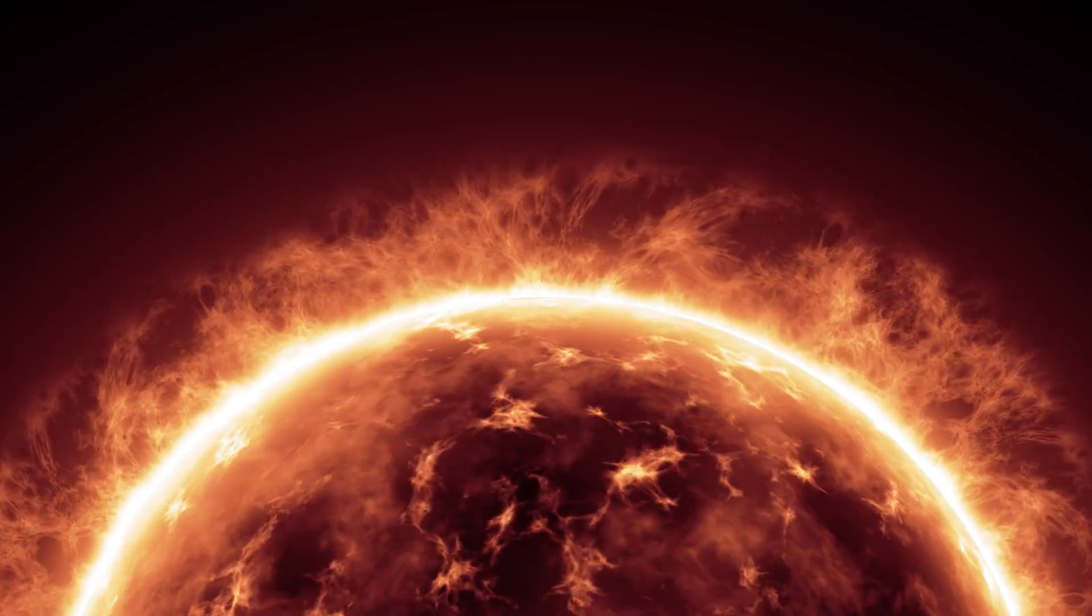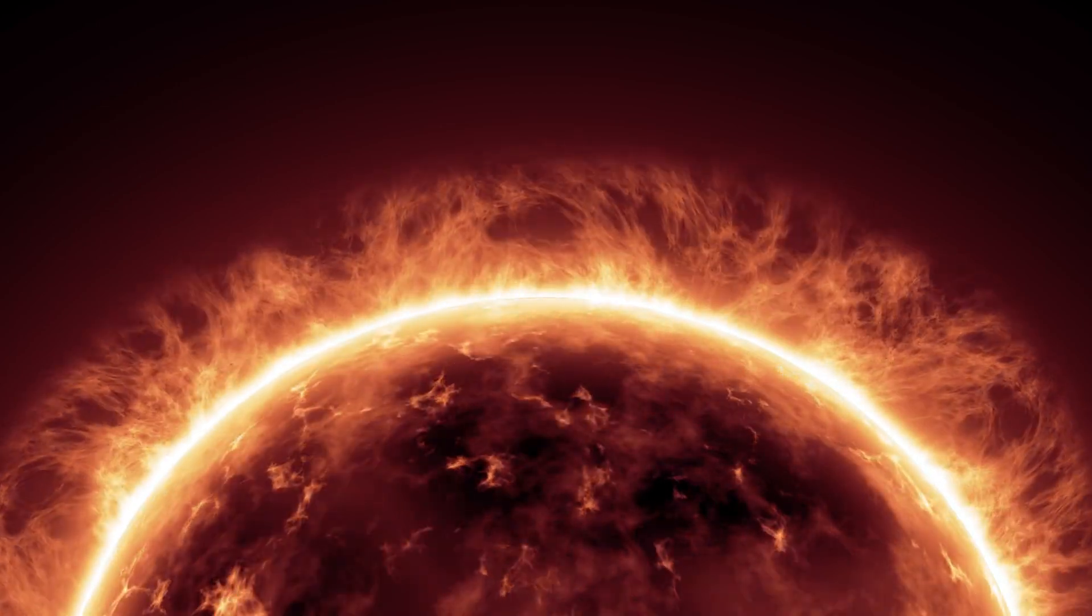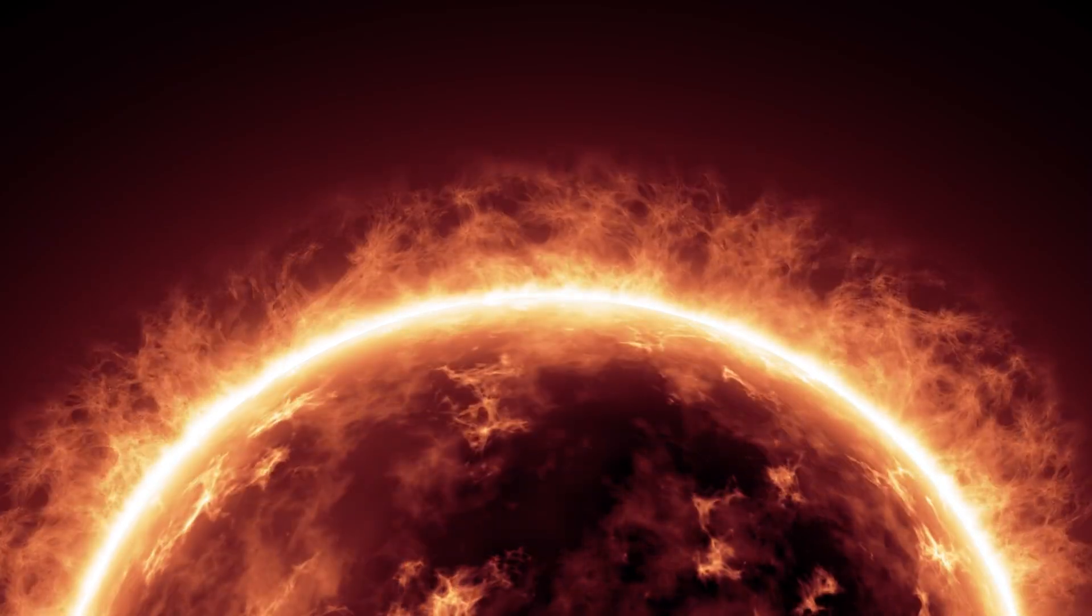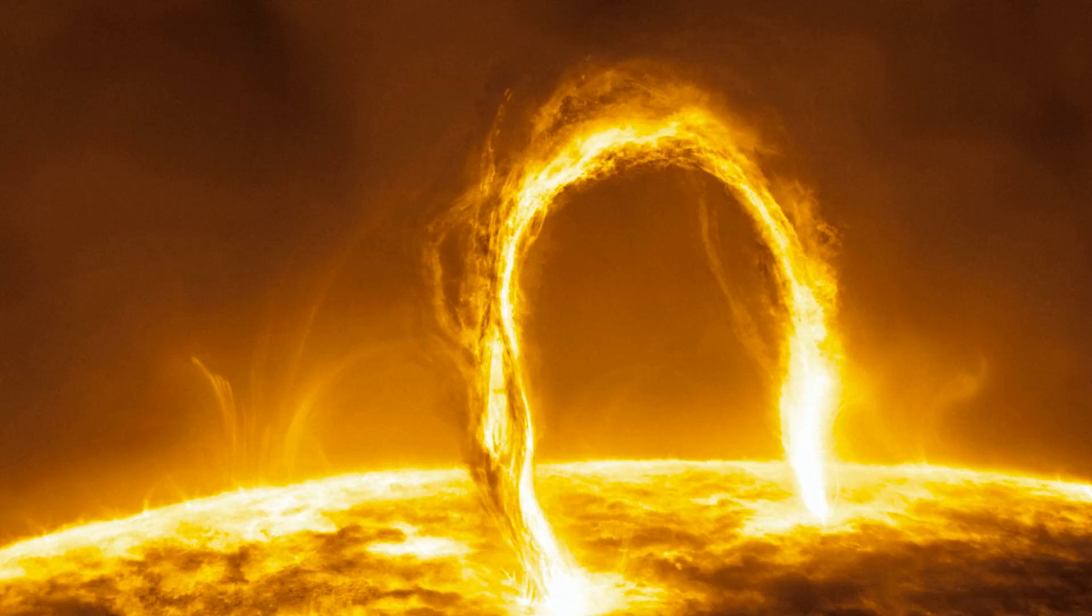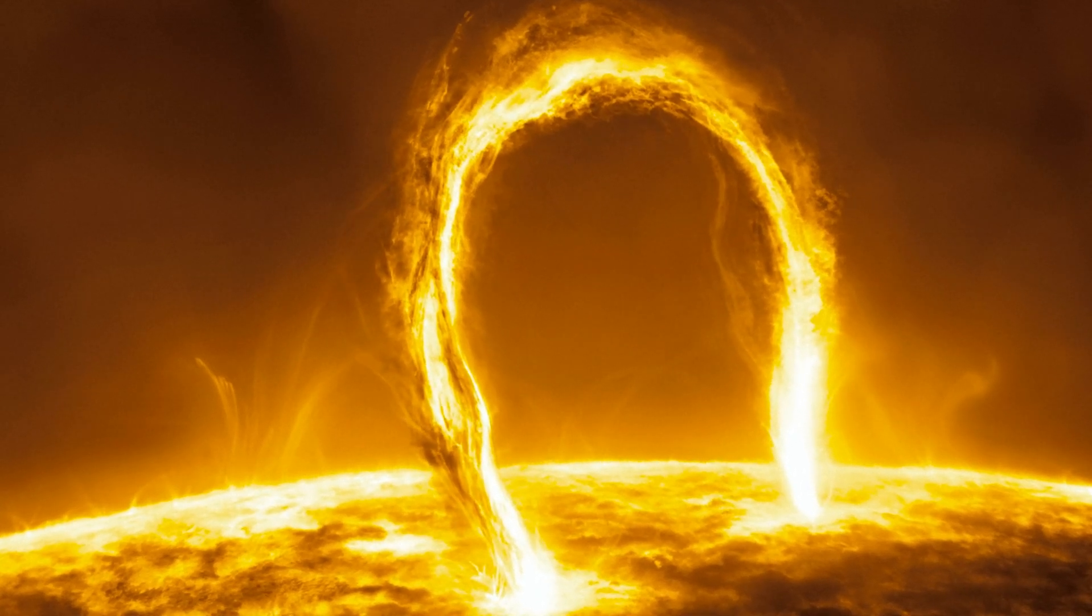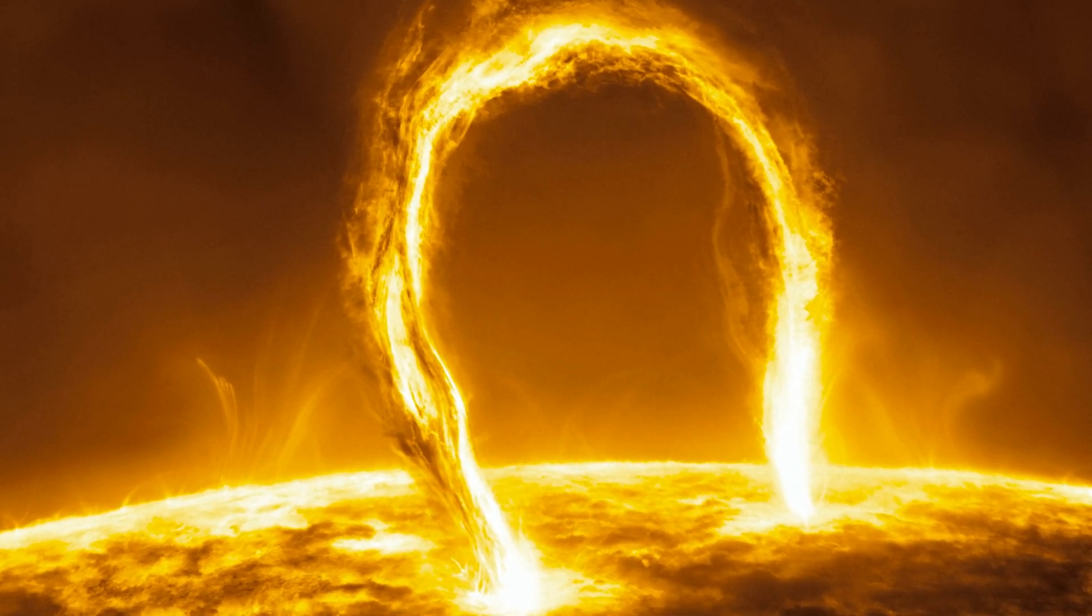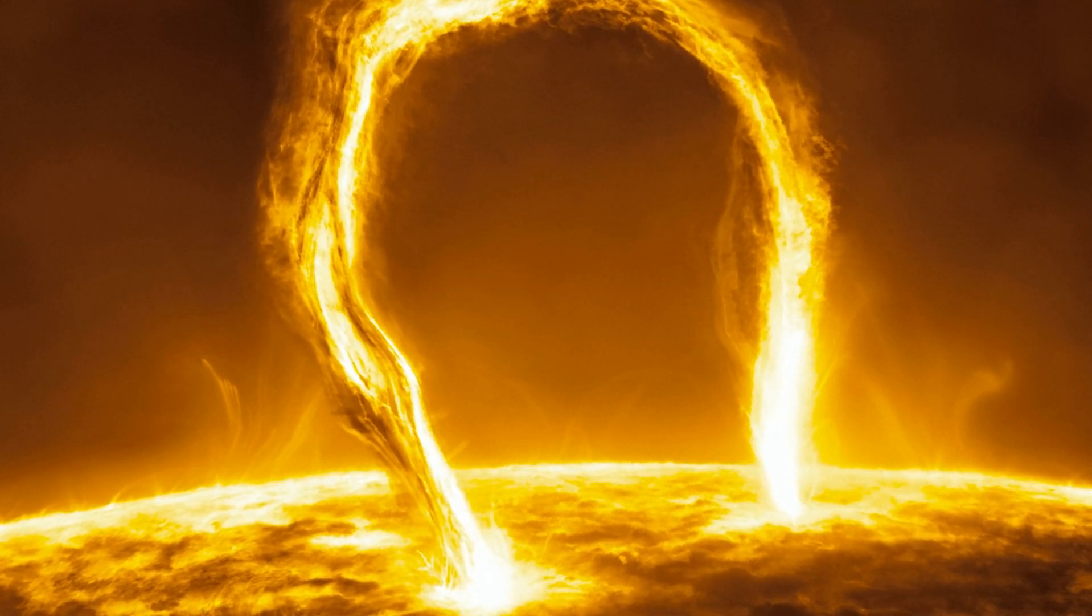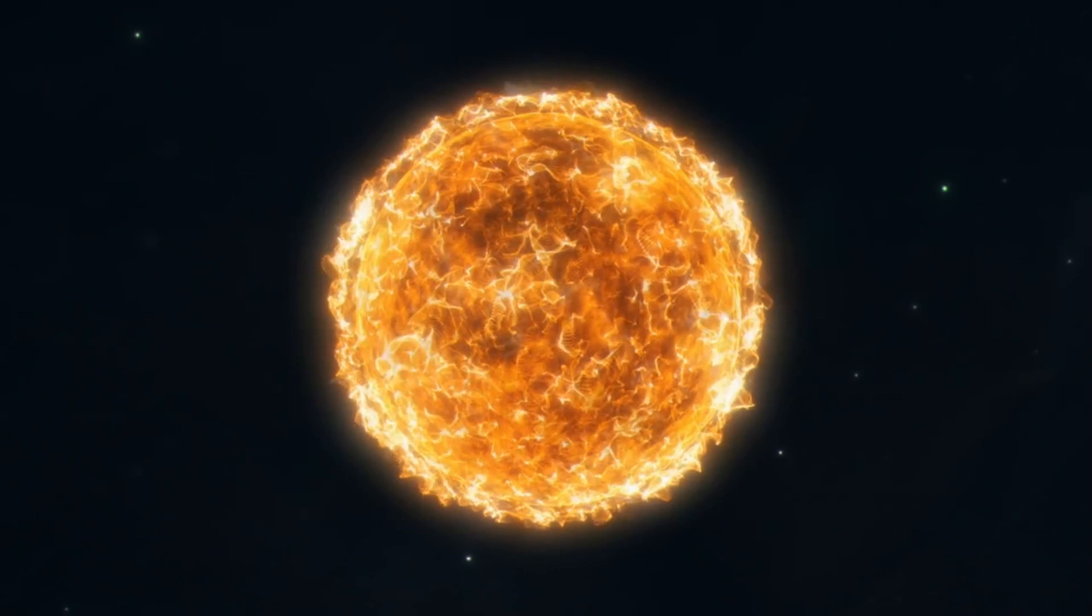The nebula surrounding Betelgeuse is roughly 30 astronomical units, or 30 times the distance between the Sun and Earth, and it is 250 times larger than the star itself. At its center, a star's hydrogen atoms fuse together under the influence of gravity, producing helium in a nuclear explosion. Heat and light are two forms of energy that are often released in abundance during the fusion process.